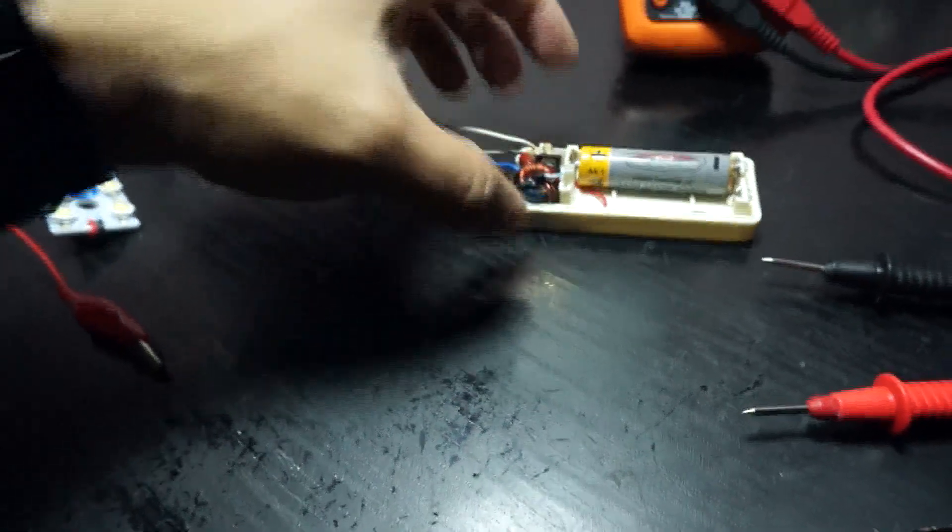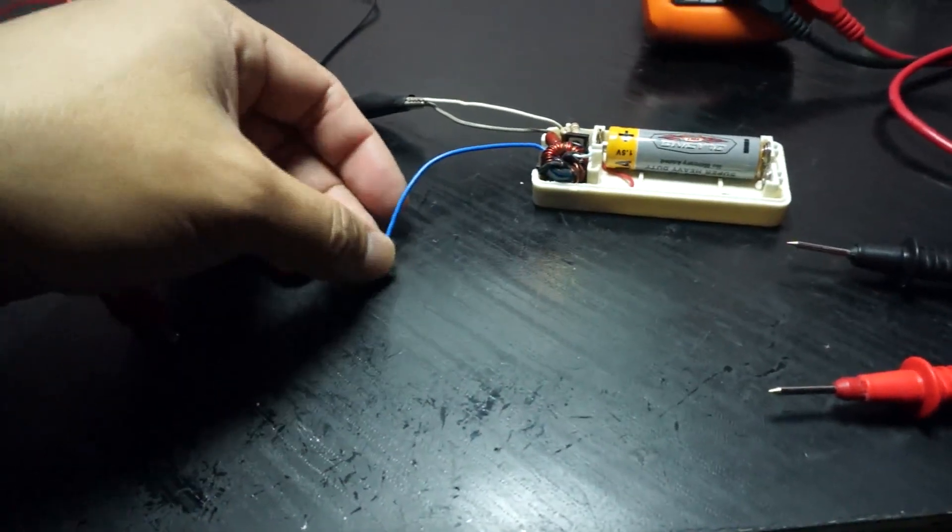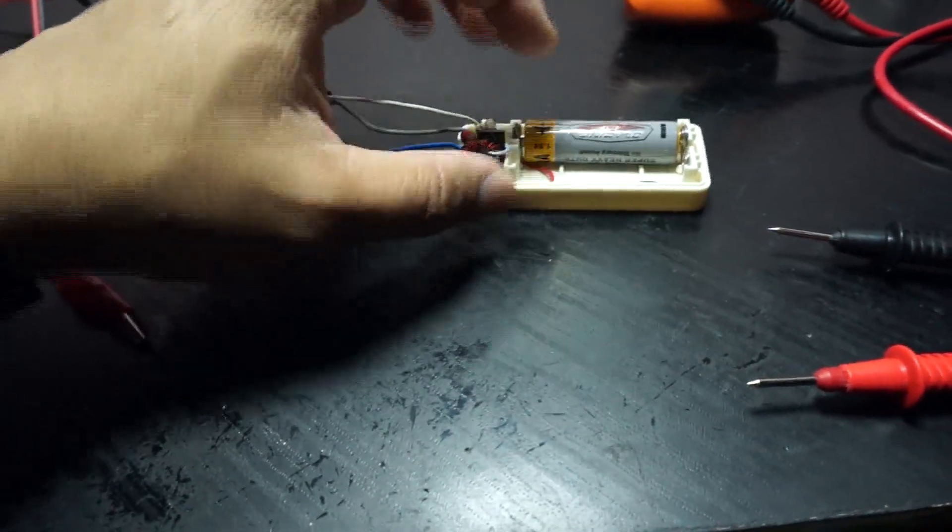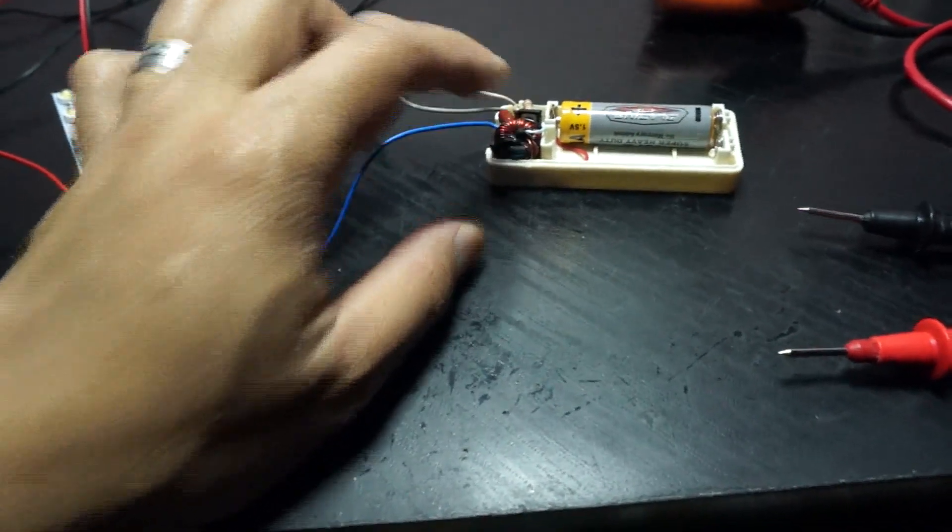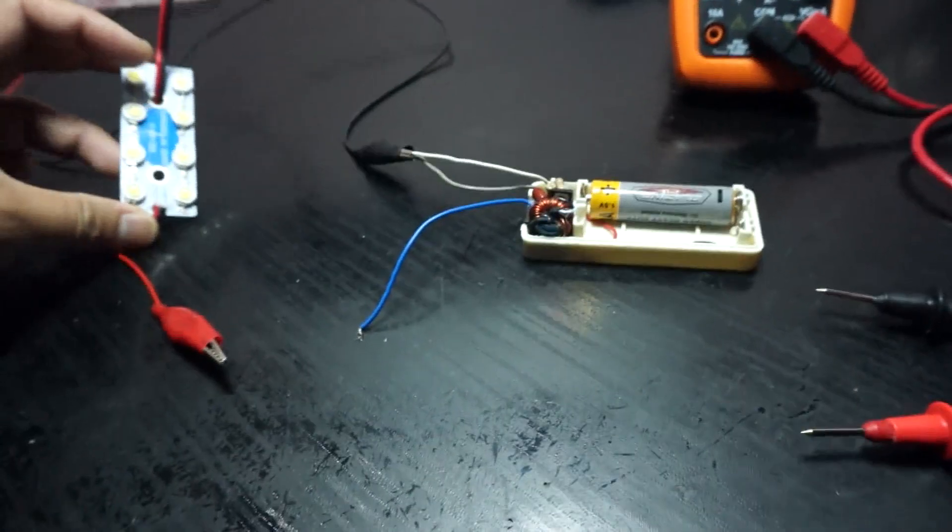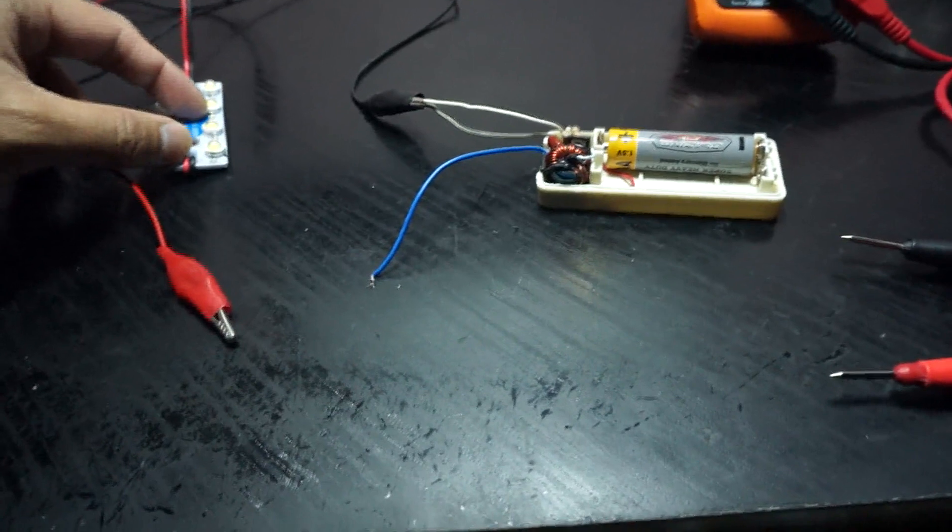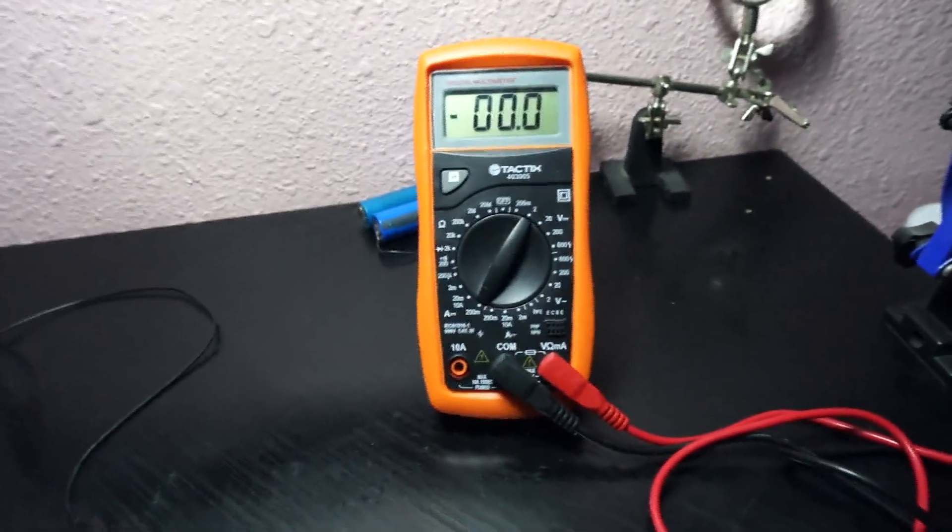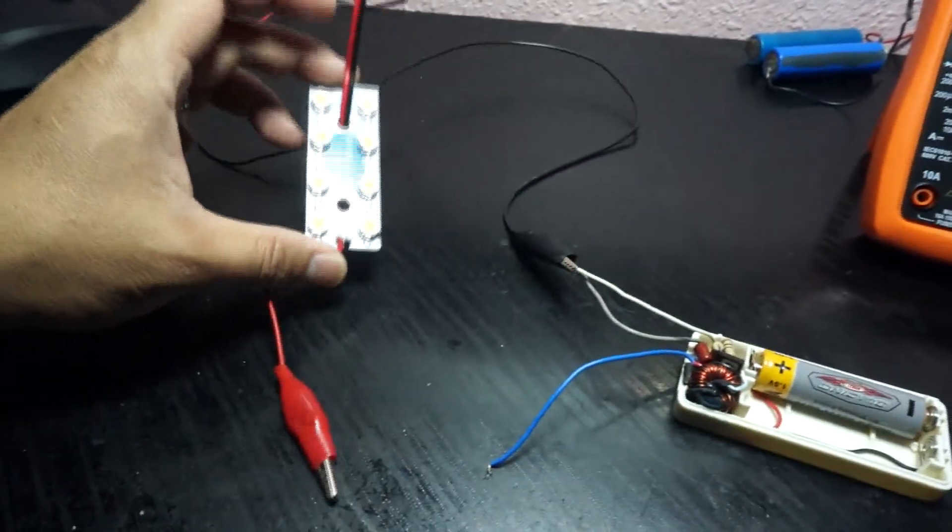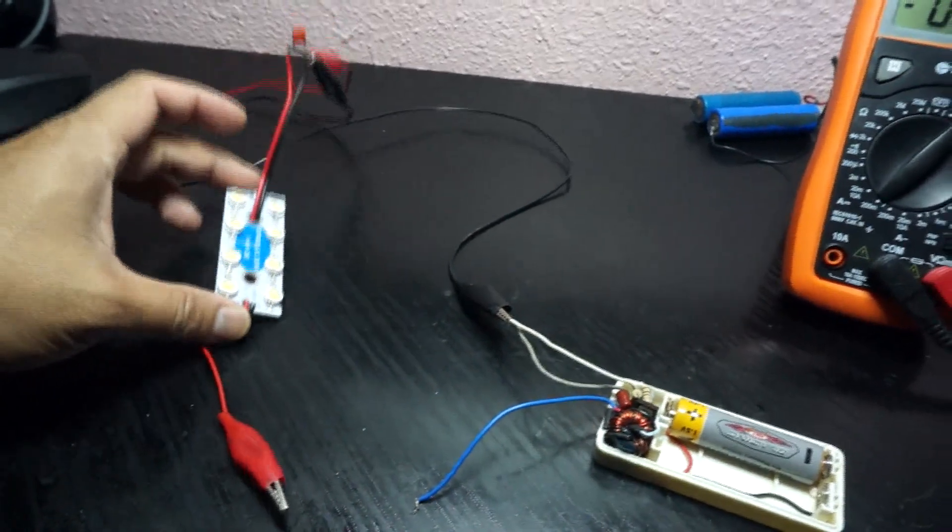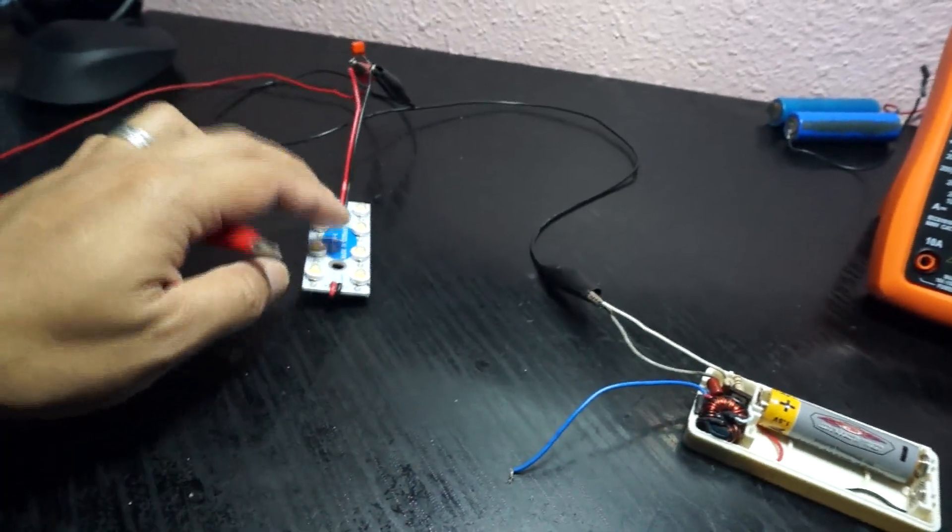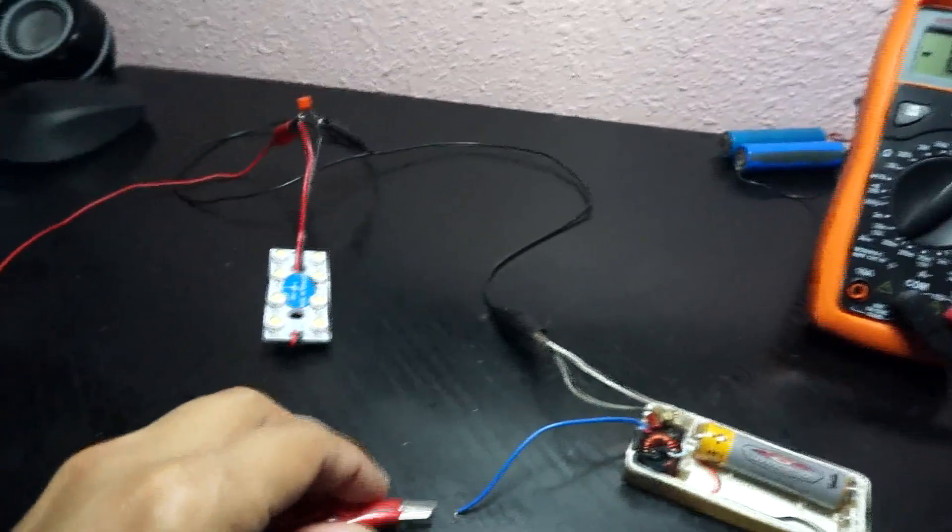Let me show you how this circuit works and later on I'll show you the amp draw from this 1.5 volt battery. So the lights, see here, this LED, and this is how it performs.